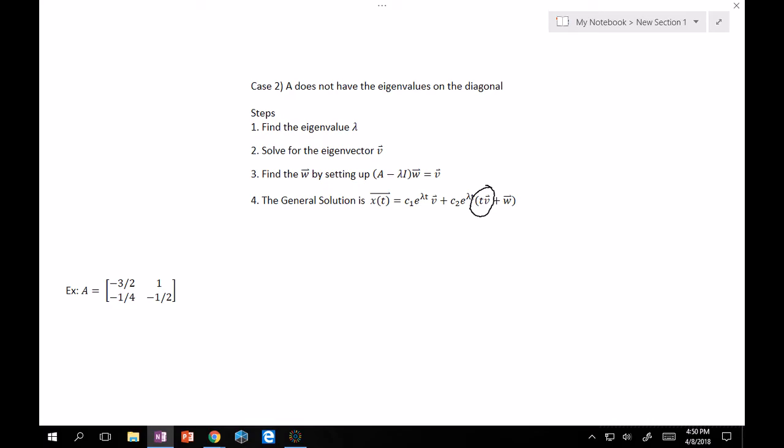This should kind of remind you of, remember when we had redundancy in method of undetermined coefficients? We multiplied by T to get rid of that redundancy, right? Same kind of deal here. We have the redundancy with this first part of our solution. Therefore, to get rid of it, we multiply it by T and we add this little extra W so that it makes sense as part of our treatment of vectors and 2D systems. So, let's do an example.